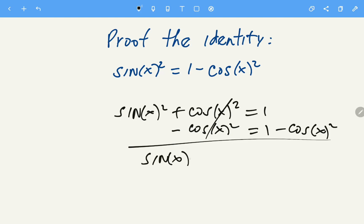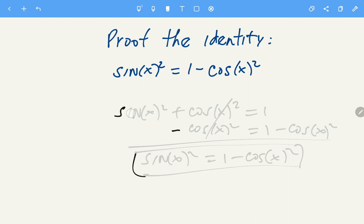So we have proven the identity. It was quite fast, right? So let's do another proof that also starts from the basic identity sine squared plus cosine squared equals 1.